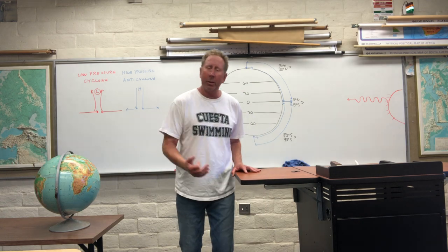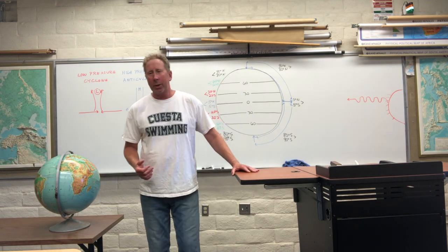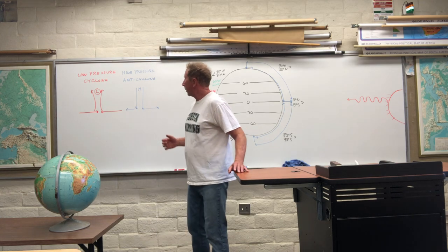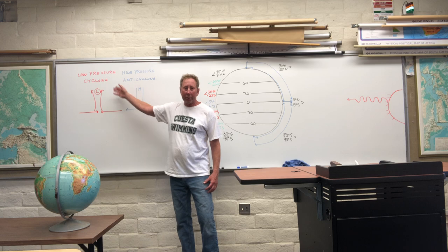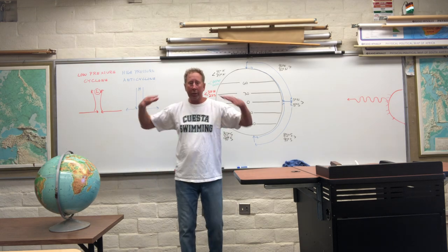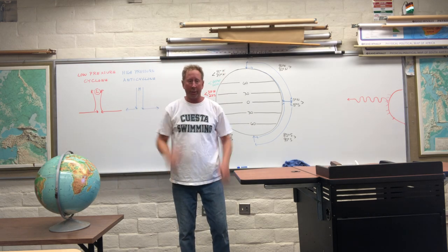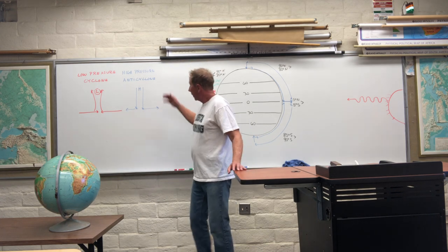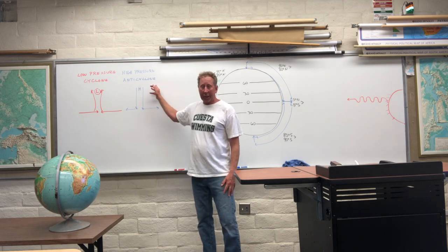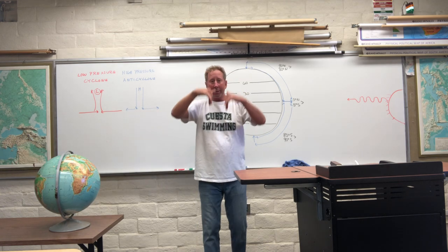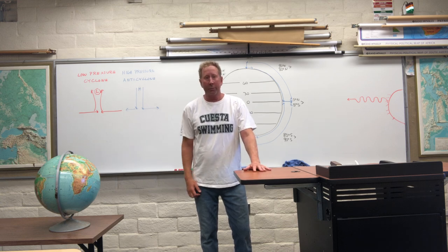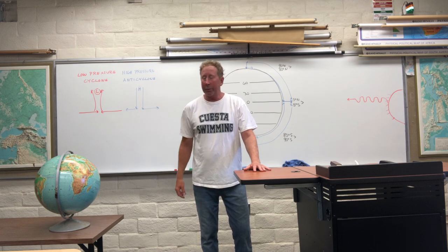This exercise will take a little bit longer to explain. This is on pressure belts and winds. First of all, a low-pressure system is also called a cyclone. In a cyclone, the air converges at the surface and rises. We associate cyclones with stormy, cloudy weather. High-pressure systems are also called anti-cyclones. The air is subsiding and moving out in different directions. We associate that with clear, sunny weather. It could be hot or cold, but it would be clear.